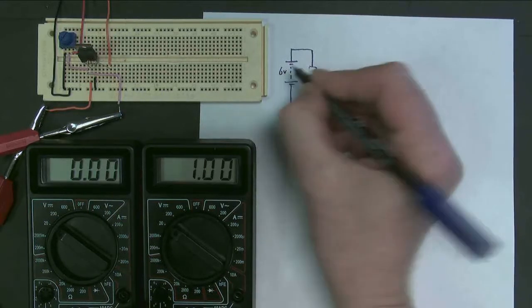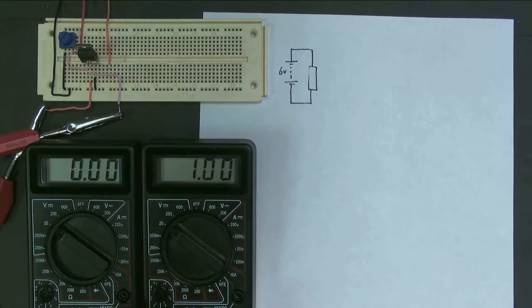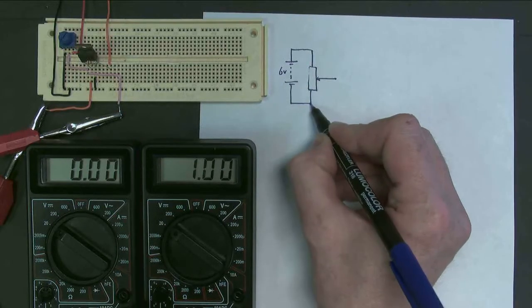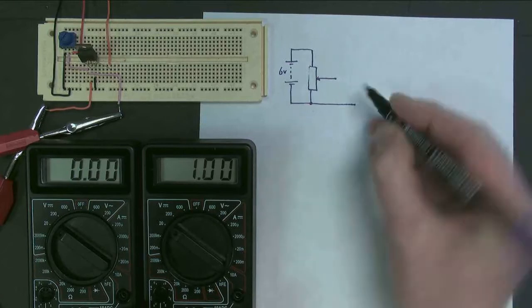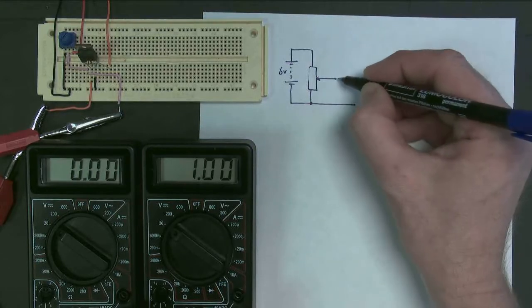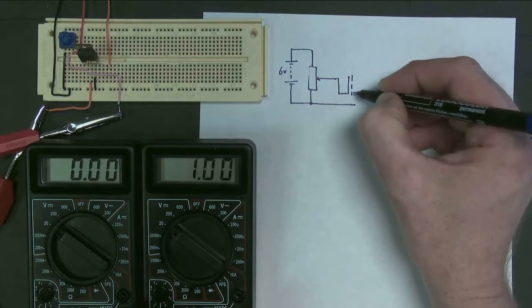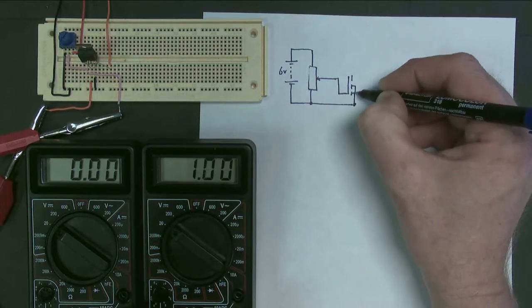That's nominally around about 6 volts. And this is providing a voltage toward the gate of our MOSFET. Now our MOSFET is connected down to the 0 volts rail, like this.